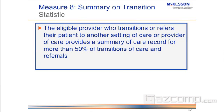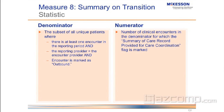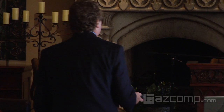Here's the statistic behind that which you have to meet: it's looking for more than 50% of the transitions of care and referrals to have either one of these printed or electronically sent. The denominator requires at least one encounter in that reporting period, marked as outbound by the provider. The number of clinical encounters in the denominator where the summary of care for care coordination is flagged must be over 50%.